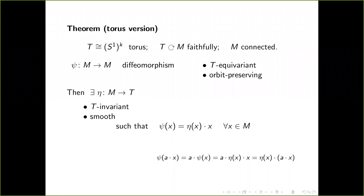If the diffeomorphism is equivariant, then on each orbit you just have a shift — you can actually define an invariant. For each orbit you have one element of the torus and you're shifting by that element. The challenge is to make that function smooth. Can you find a smooth function with values in the torus such that the diffeomorphism is given by the torus element associated to each point?